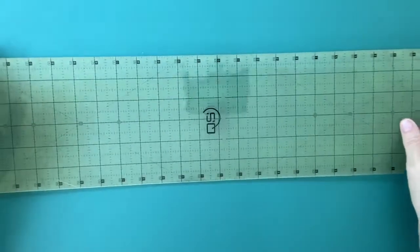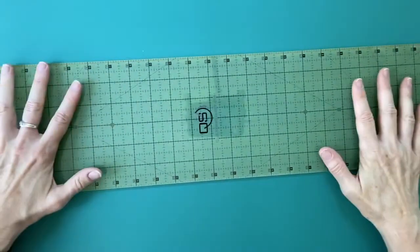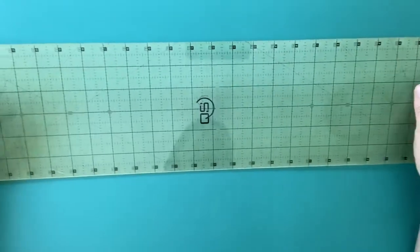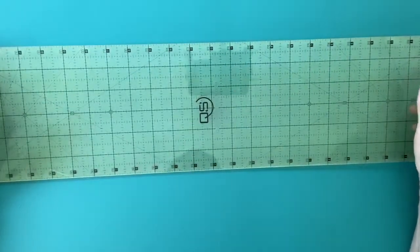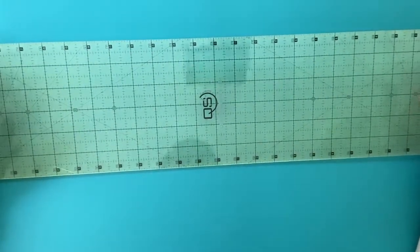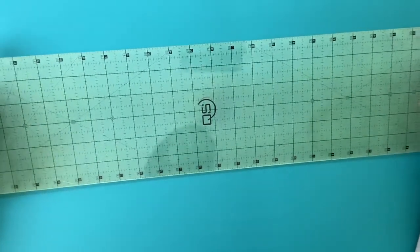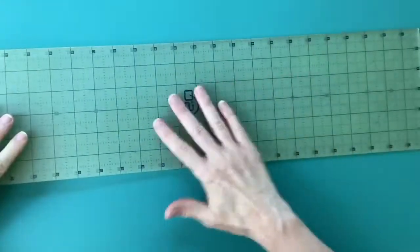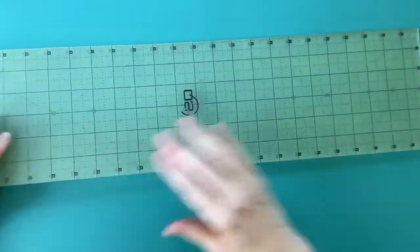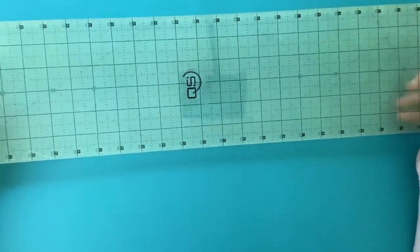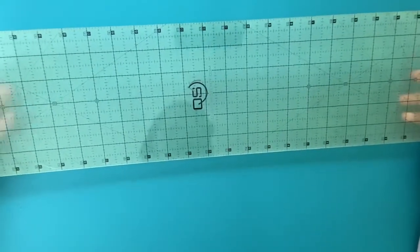The first one, the ruler that I say you should have no matter what. If you can only buy one ruler, then it would be this one. Not particularly this brand, but a six by 24 inch ruler. This is the workhorse for any strip quilting or piecing that you're doing. This happens to be a Quilter Select, which I like because it has a non-skid surface on the back that really is non-skid when it's on fabric. So I've been collecting them.